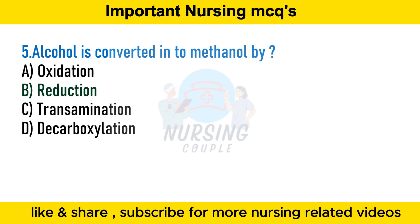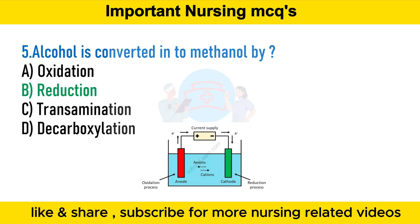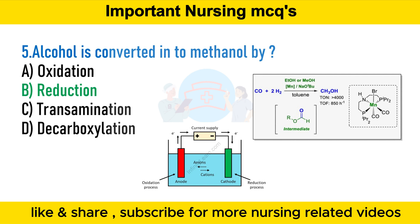Intramolecular dehydration of ethanol in the presence of concentrated sulfuric acid gives ethylene. Ozonolysis of ethylene followed by hydrolysis in the presence of zinc produces formaldehyde, which on reduction gives methanol. Reduction is a process in a chemical reaction in which a chemical species acquires electrons and its oxidation number lowers. It is the removal of oxygen from a substance or the addition of hydrogen to it.